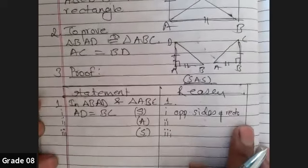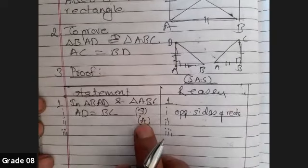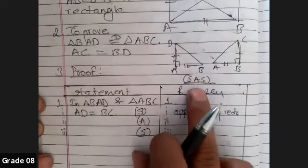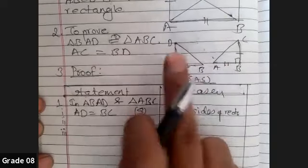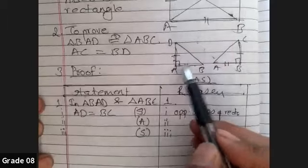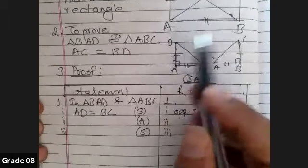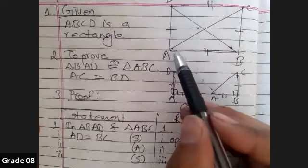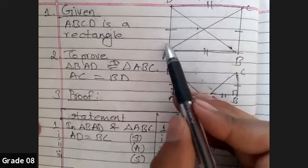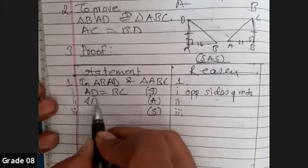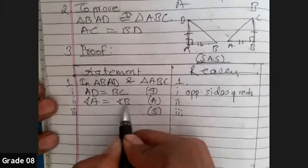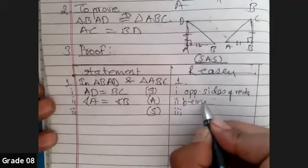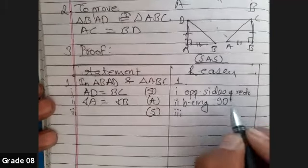And our second thing was angle equal. You can simply see the symbol only: they are 90 degree, 90 degree. And remember, because this was a rectangle, we got this advantage, otherwise we wouldn't have got, because angles of rectangle is always 90. So you can simply write angle A equals to angle B, being 90 degree. You can write both being 90 degree.